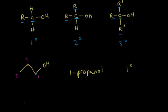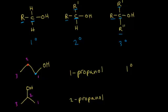Let's look at a similar molecule — still three carbons, but this time the OH is on the middle carbon. Numbering it: carbon 1, 2, 3. This is a three-carbon alcohol, so it's also propanol, but the hydroxyl group is now on carbon 2, so we write 2-propanol. This is also called isopropanol or rubbing alcohol, but 2-propanol is the proper IUPAC nomenclature.